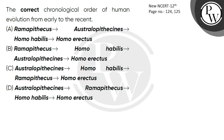Hello children, let's read this question: the correct chronological order of human evolution from early to the recent. Here you are given Ramapithecus, Australopithecus, Homo habilis, and Homo erectus. So when we talk about human evolution...